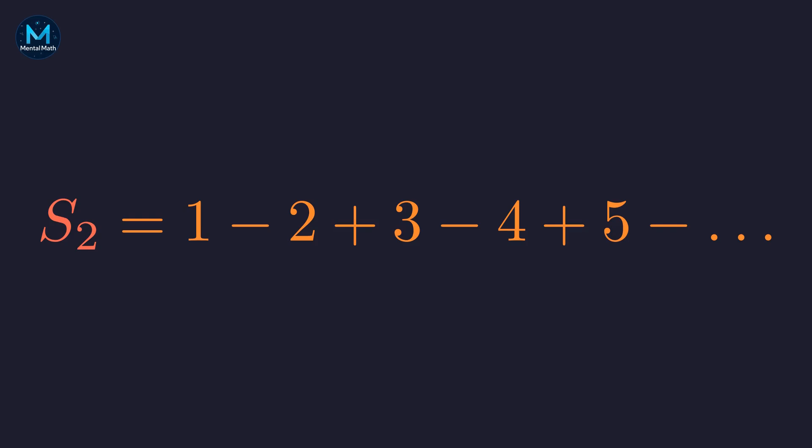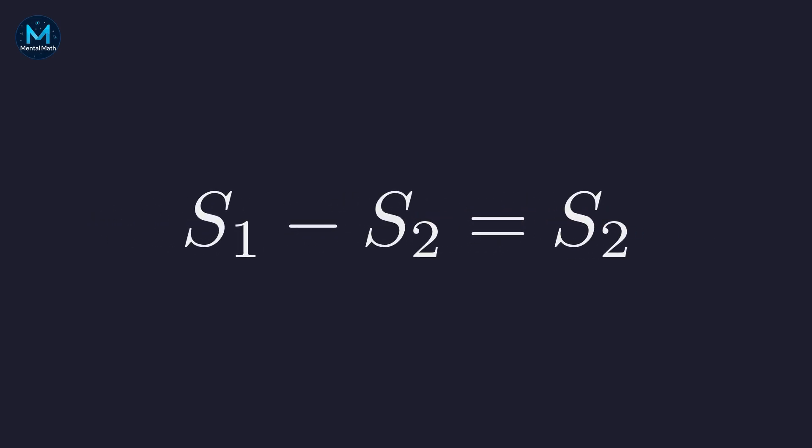Let's write out the expression for S sub 1 minus S sub 2 showing both series. We will perform a formal term by term subtraction. The first term is 1 minus 1. The second is negative 1 minus negative 2. The third is 1 minus 3 and so on. Let's evaluate each of these simple arithmetic operations. The result is 0 plus 1 minus 2 plus 3. An interesting pattern emerges. If we ignore the initial 0, the resulting series is exactly our original series, S sub 2. This gives us the equation S sub 1 minus S sub 2 equals S sub 2.